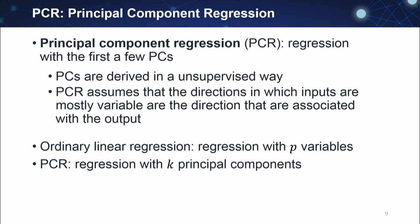The principal component regression is a regression with the first few principal components. Linear regression is usually used, but you can use any other regression method by just transforming the data using the principal components. Keep in mind that these principal components are derived in an unsupervised way — when we calculate them, we do not look at y, we only look at x. So PCR assumes that the direction in which inputs are most variable is the direction most associated with the output. In many applications this assumption works reasonably well, but it is not always efficient.